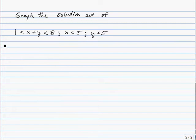So first of all, looking at 1 is less than x plus y is less than 8, let's consider this can be rewritten as x plus y is greater than 1 and x plus y is less than 8. So we actually have two separate linear inequalities here.